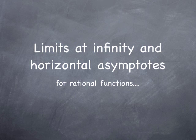Now that we have seen in the previous video the definitions for limits at infinity and the interpretation in terms of horizontal asymptotes, we're going to see how to find these limits at infinity and horizontal asymptotes in the case of rational functions in particular. So we will focus on this case of a quotient of two polynomials.